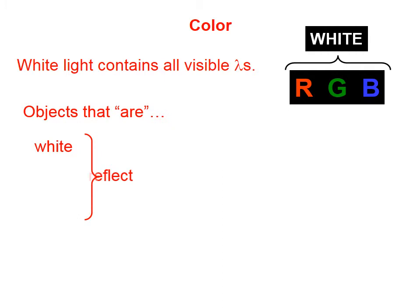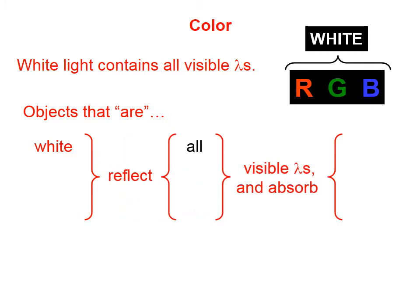Objects that are, that is, objects that we perceive to be white, reflect all visible wavelengths and absorb none.